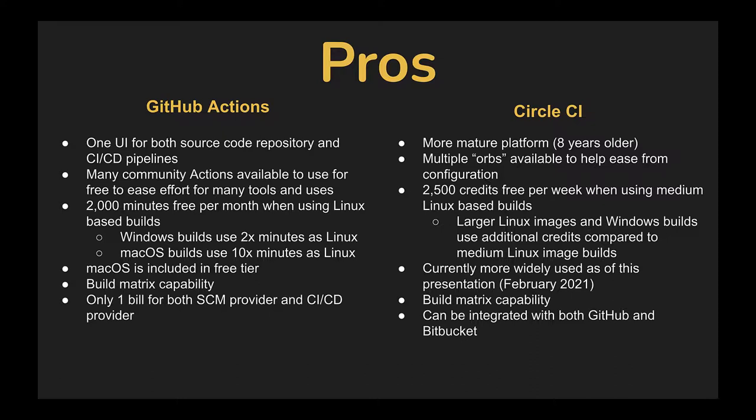The pros for CircleCI: it's a more mature platform, having been around about eight years longer. It also has multiple orbs or plugins to help ease your configuration maintenance. It offers a free plan with 2,500 credits per week when using the default medium Linux image builds, though larger Linux images or Windows builds use additional credits per build minute. CircleCI is currently more widely adopted as of this presentation in February 2021, though GitHub Actions will likely make up ground quickly. They also offer the build matrix capability and can integrate with both GitHub and Bitbucket source code repositories.